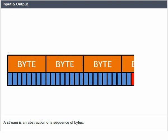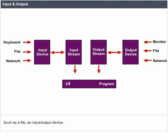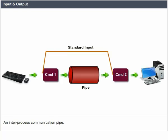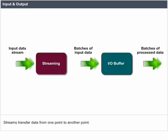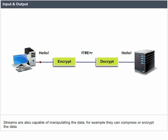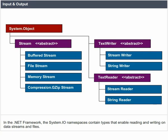Input-Output. The input and output in C-Sharp is based on streams. A stream is an abstraction of a sequence of bytes, such as a file, an input-output device, an inter-process communication pipe, or a TCP/IP socket. Streams transfer data from one point to another and are also capable of manipulating the data — for example, they can compress or encrypt the data. In the .NET framework, the System.IO namespace contains types that enable reading and writing on data streams and files.